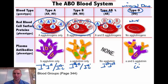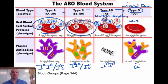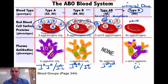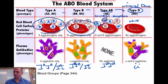AB blood can receive from O, from B because they have B antigens, and from A because they have A antigens — so AB is called the universal acceptor. If you have AB blood you can get it from anybody, but you can only give it to people who have AB, because if you give it to a person with A the B part is recognized as foreign, and if you give it to a person with O, O can't get blood from anybody but O because it recognizes anything with antigens as foreign.